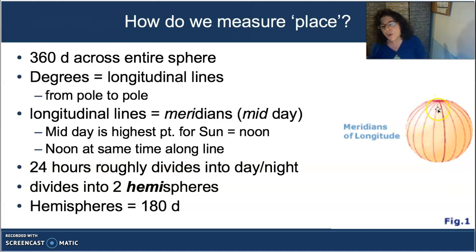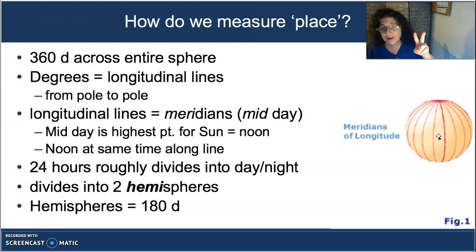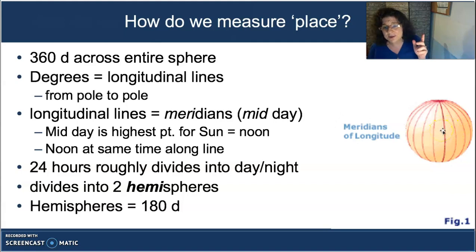These lines go from north to south pole all the way around 360 degrees. Roughly half of this rotation will be in daylight and half in nighttime. We can divide the earth into hemispheres — "hemi" meaning half — roughly the daylight side versus the nighttime side. Each hemisphere covers about 180 degrees: 180 degrees for the western hemisphere, and 180 degrees for the eastern hemisphere.